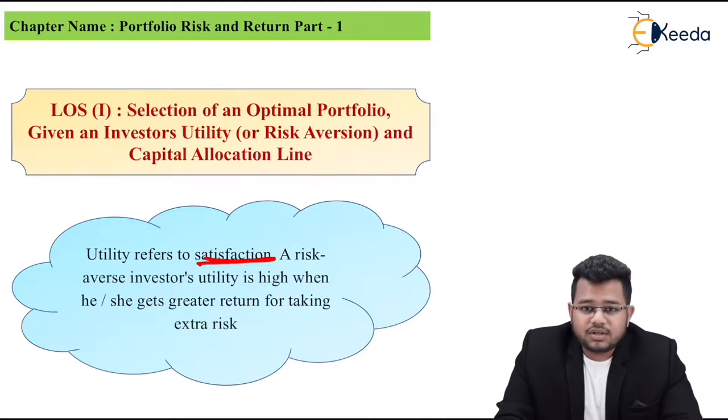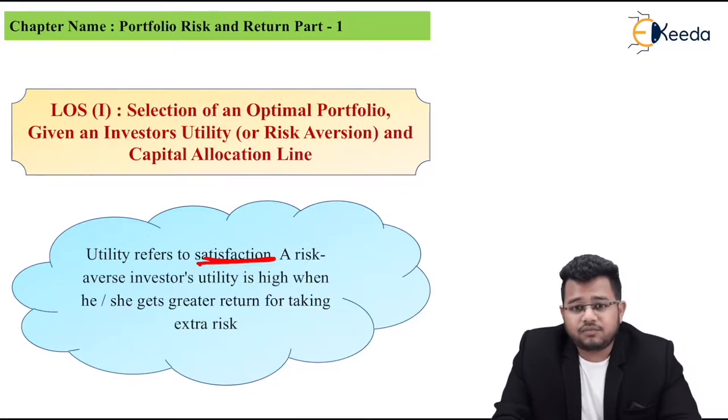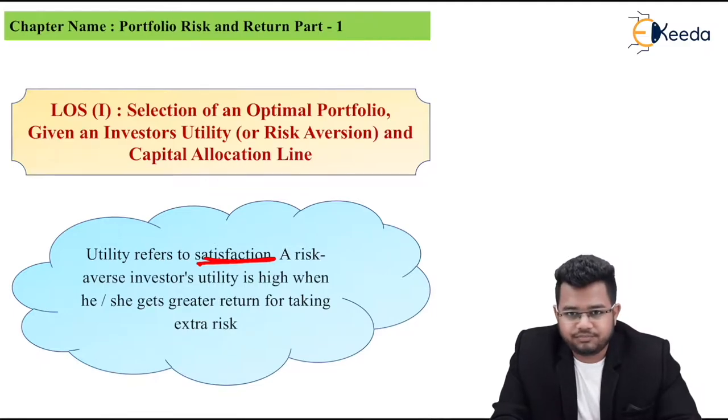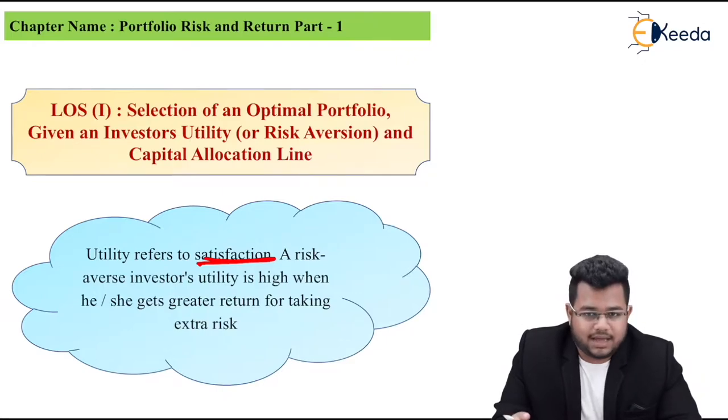Utility refers to satisfaction. A risk averse investor's utility is high when he gets extra return for taking extra risk, like in Efficient Frontier case. If I have two portfolios with 7% risk, I would choose the portfolio which has higher return. That means utility or satisfaction is high.